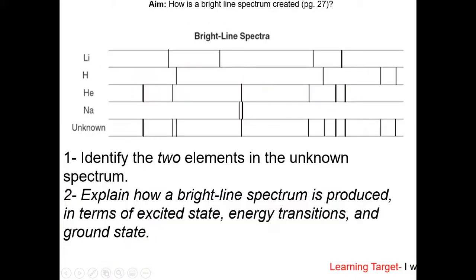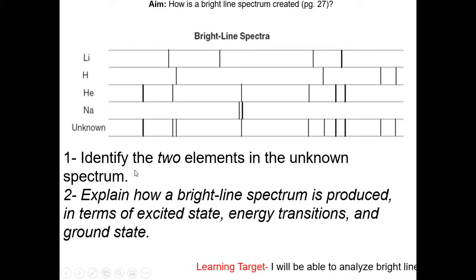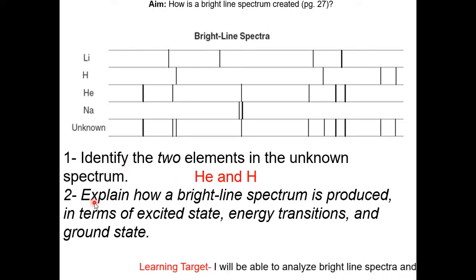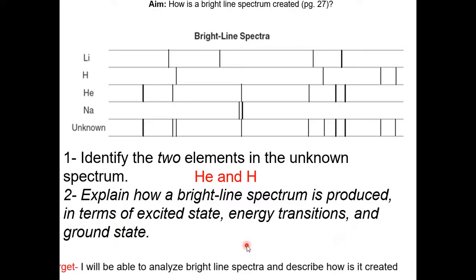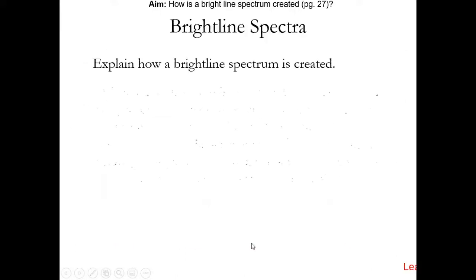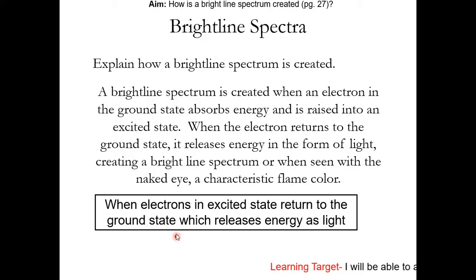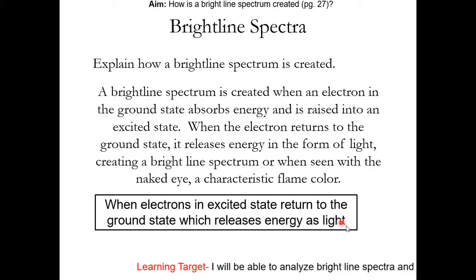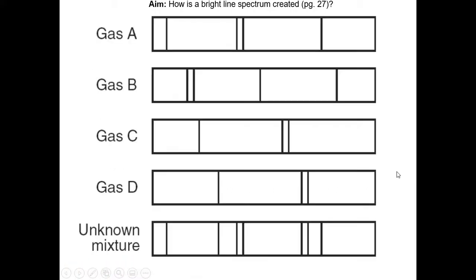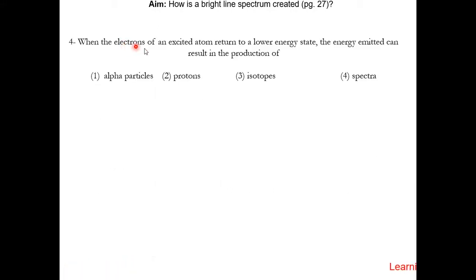Now do the five questions as practice. Pause the video and resume once you have the answers. Here are the answers: number one is helium and hydrogen. For number two, it is a Regents free response question — notice the phrase 'in terms of,' so you have to mention those concepts in your answer. A short and concise acceptable answer is: when electrons in the excited state return to the ground state, which releases energy as light. For number four, when electrons of an excited atom return to a lower energy state, the energy emitted can result in the production of spectra.